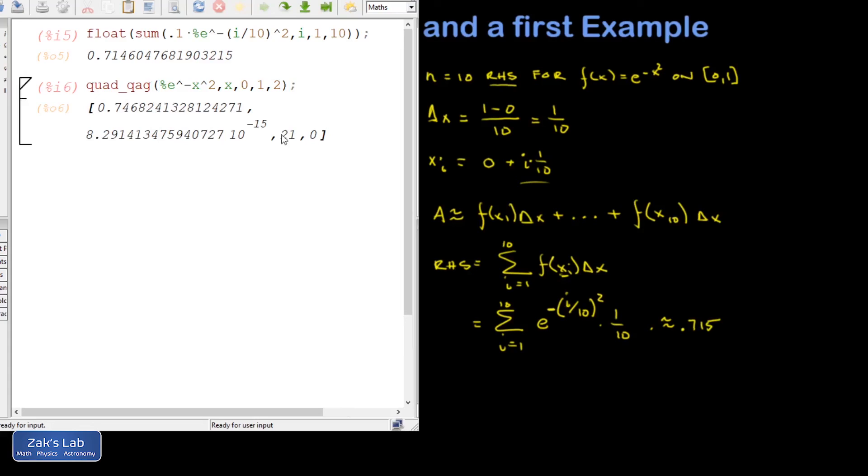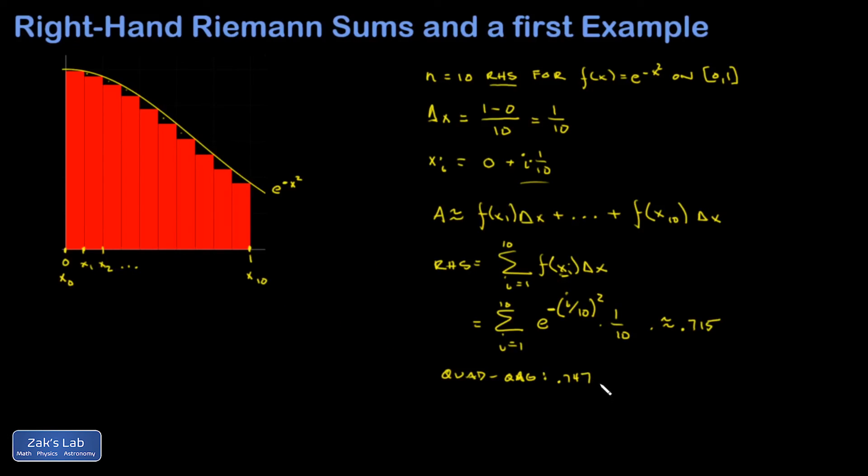I'm going to hit shift enter and the first number you get there is the actual approximation of area. So in this case, just keeping three decimal places, I get 0.747, and I can see that my rectangle approximation was indeed an underestimate.